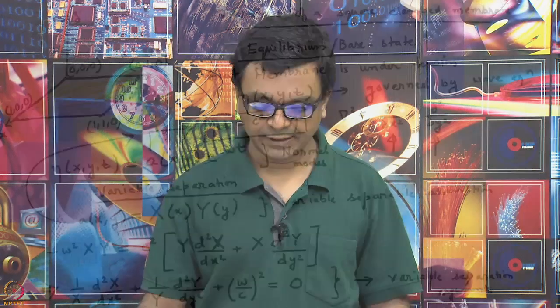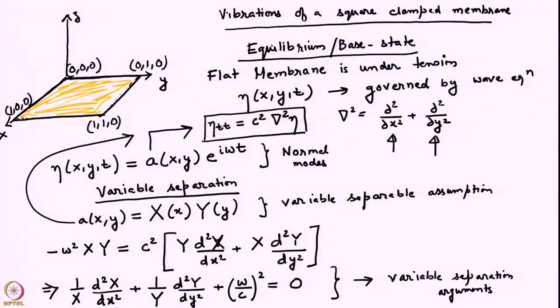We said that the eigenmode can be written in variable separation form as some capital X, which is a function of small x, into capital Y which is a function of small y. Substituting that, we had obtained an equation. Whenever we do normal mode analysis, it always leads us to an eigenvalue problem.